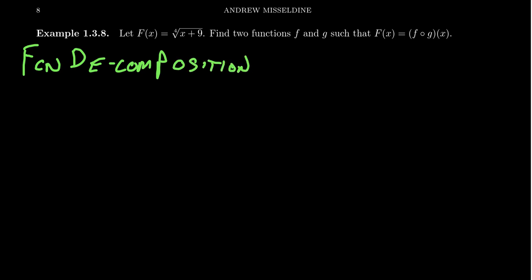So what this means is we are going to be given a function. In this case, we have capital F of X equals the fourth root of X plus nine. And we want to find two functions, F and G, so that when F is composed with G, we get back capital F. That is, can we recognize big F as a composite of two simpler functions? And it turns out there's a couple of different ways one could do this. This is not a unique process.